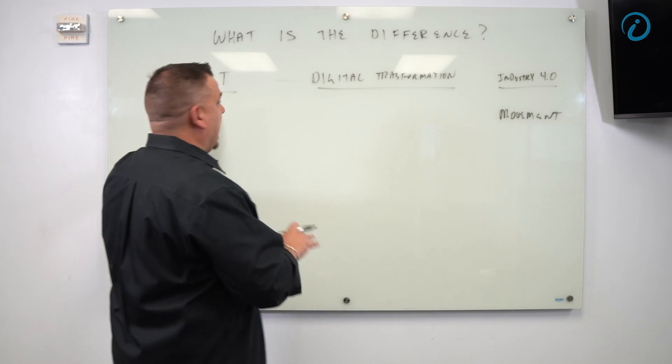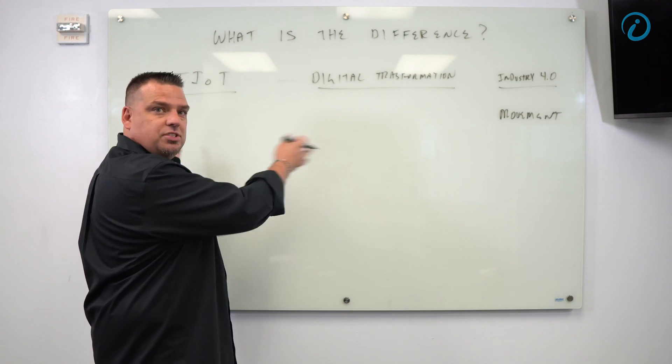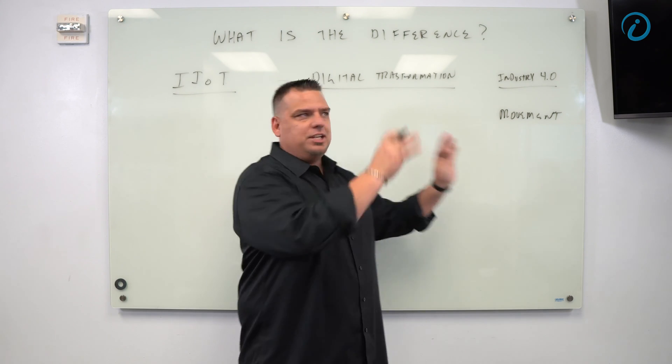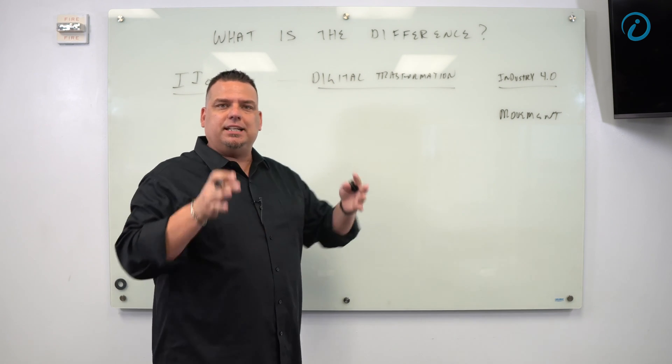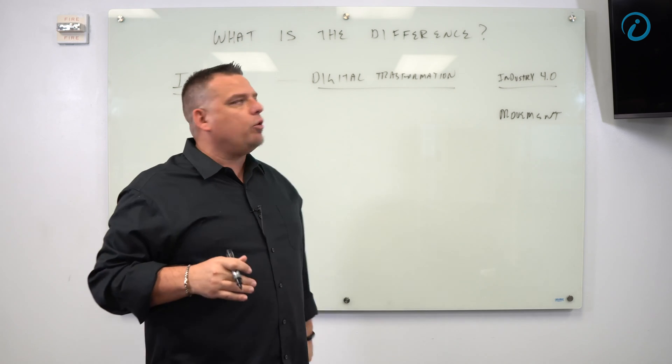Digital transformation and IIoT are mechanisms used to turn data into information. Industry 4.0 is the movement, the place in time. That's what I4.0 is.